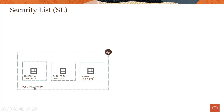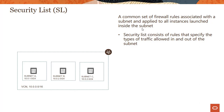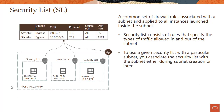As you can see here, I have a VCN with a 10.0.0.0/16 address space and I have three subnets. These can be regional, or if you are in a multi-AD region, these can be specific to ADs. So what is a security list? A security list is a common set of firewall rules associated with a subnet and applied to all instances launched inside the subnet. Security list consists of rules that specify the types of traffic allowed in and out of the subnet. The first thing to notice is that the security list is applied at the subnet level.